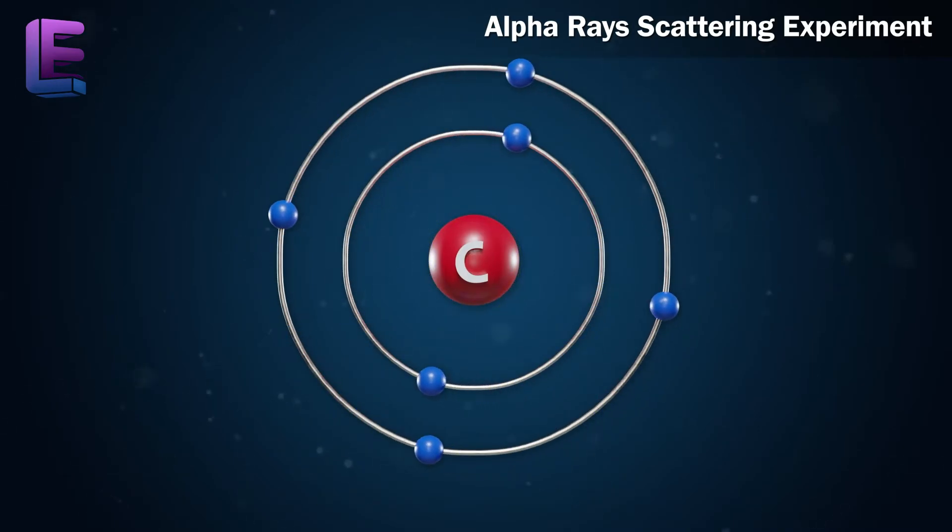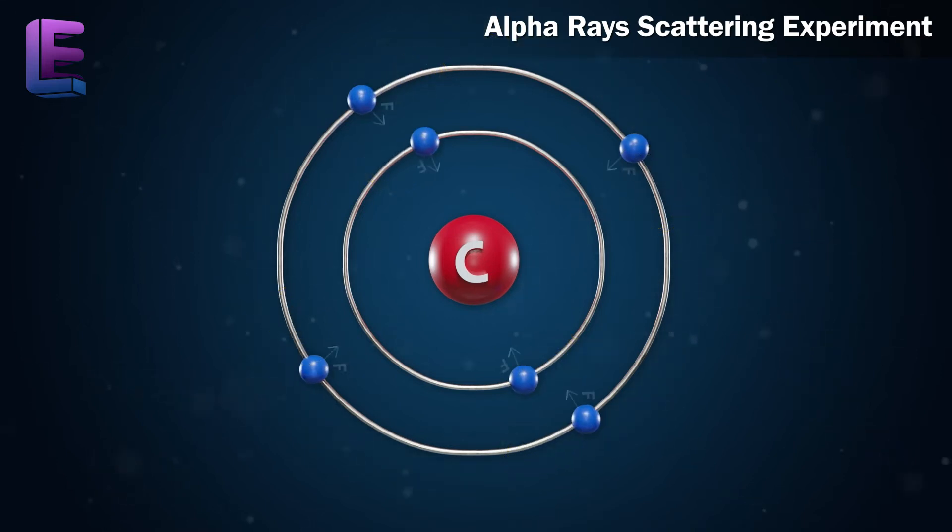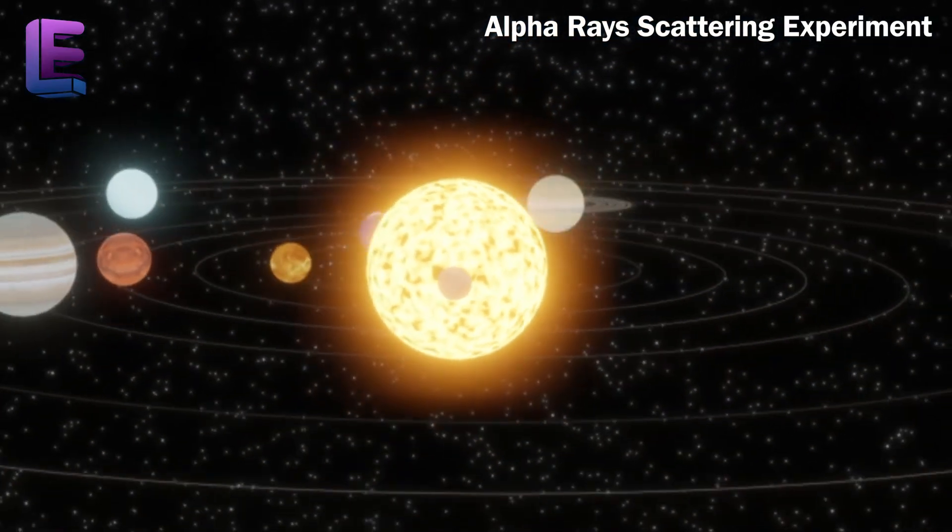There are electrons around the nucleus to neutralize the atom. They don't fall into the nucleus despite the forces of attraction because they revolve around the atom similar to the solar system.